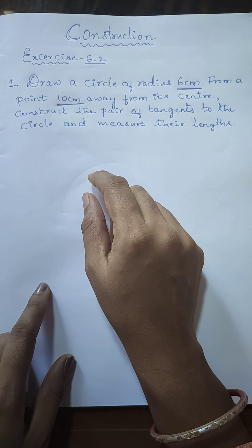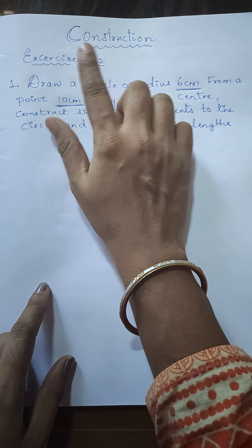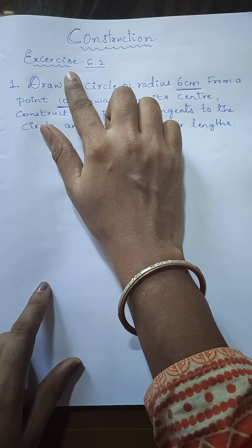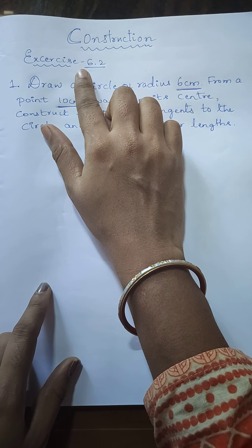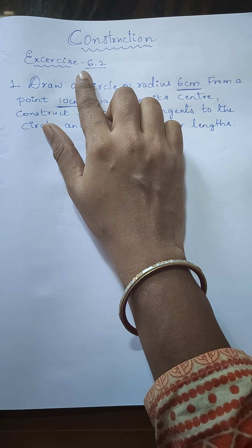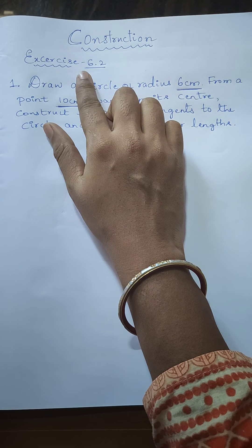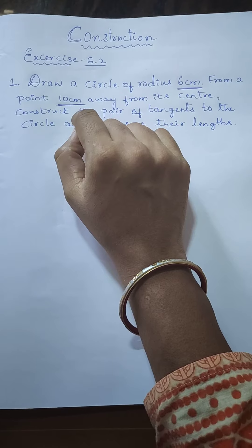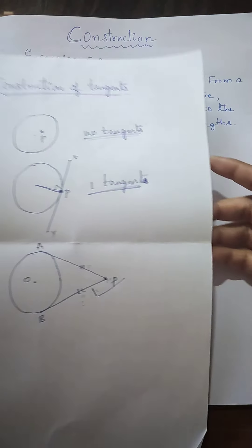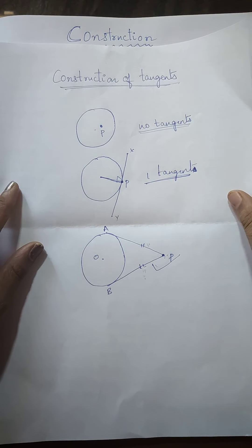Good morning students. In this session let us discuss the same lesson: construction exercise 6.2. This exercise 6.2 is related to construction of tangents. Here we are going to construct a tangent from a given point. Before going to the first question, let us recall what a tangent is and how many tangents can be drawn from a given point.